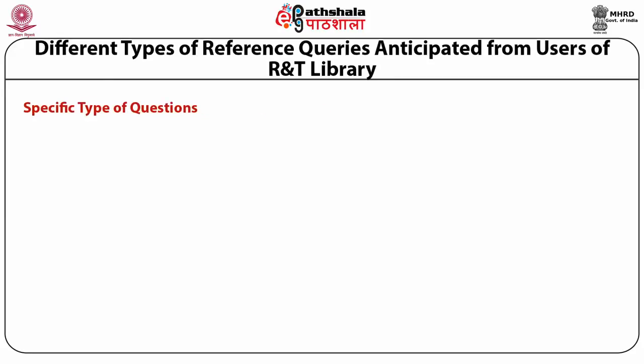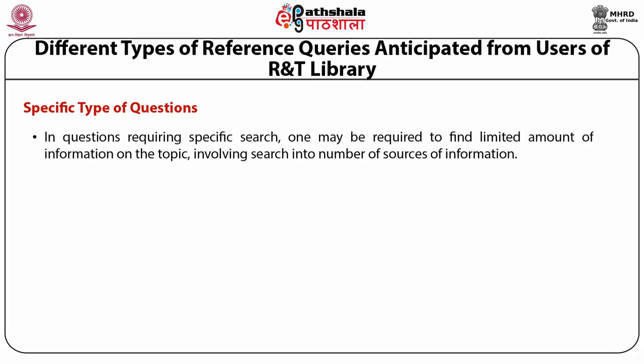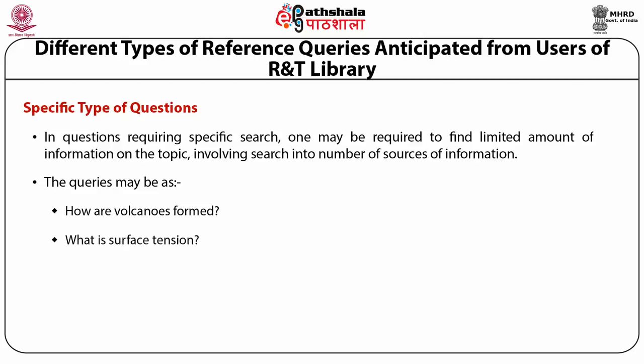Number three, specific type of questions: in questions requiring specific search, one may be required to find a limited amount of information on a topic involving search into a number of sources of information. The queries may be, for example, how are volcanoes formed, what is surface tension, or what is the meaning of microlight.